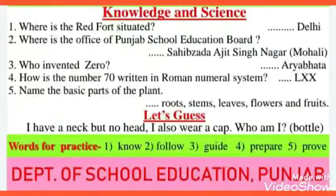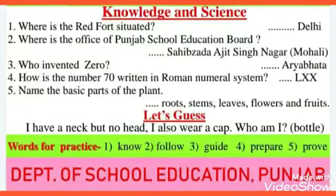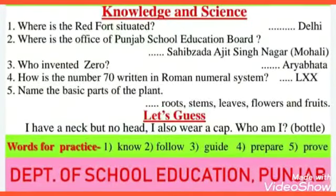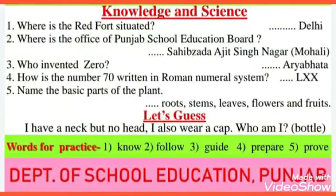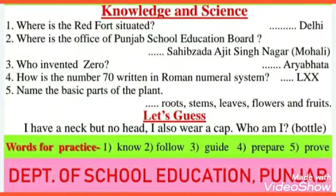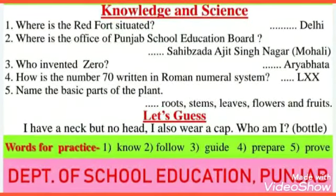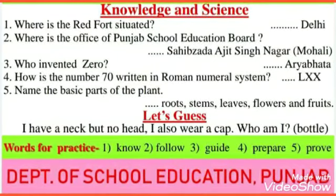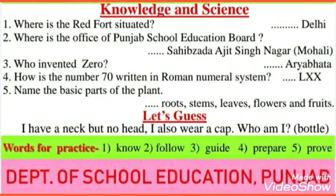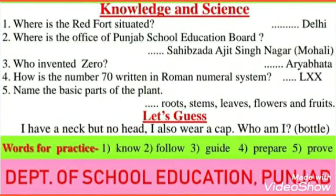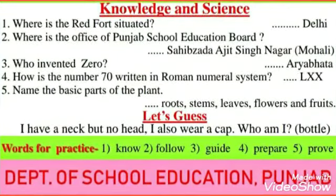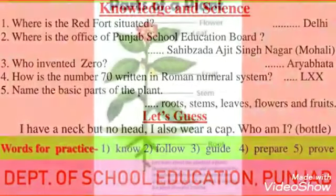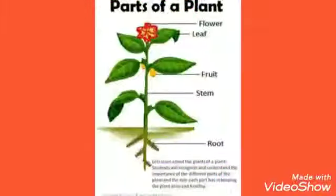Next question: Name the basic parts of the plant. The answer is roots, stem, leaves, flowers, and fruits. You can see here the basic parts of a plant.